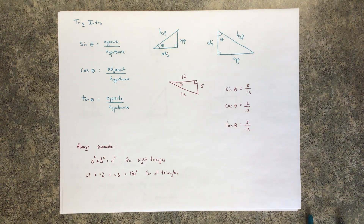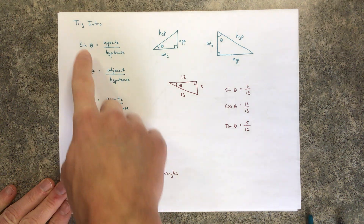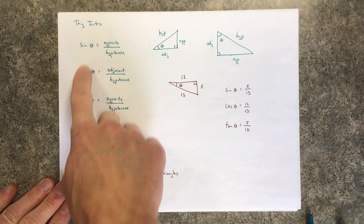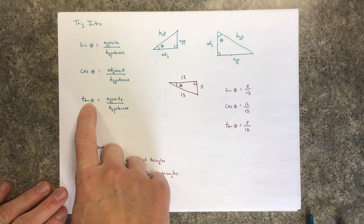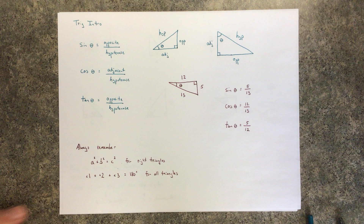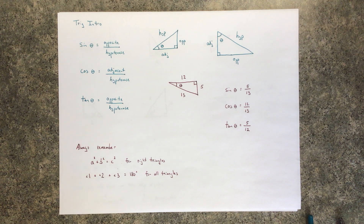Let's take a look at trig. We have three main trig functions: sine, cosine, and tangent. There are three main functions because if you look at the three different sides of a triangle, there are three different ratios you could look at.